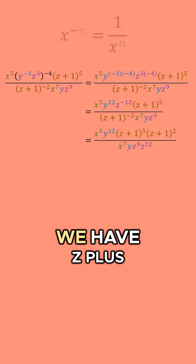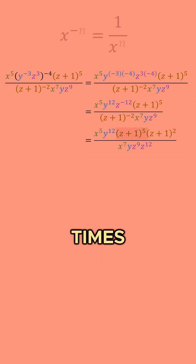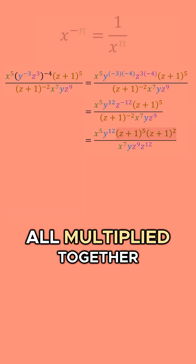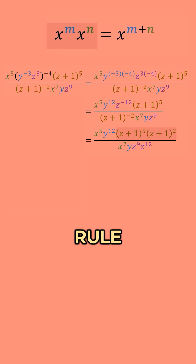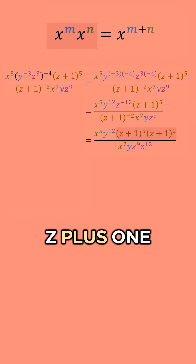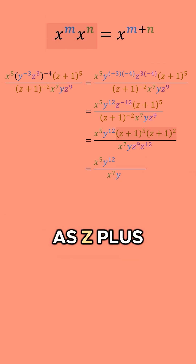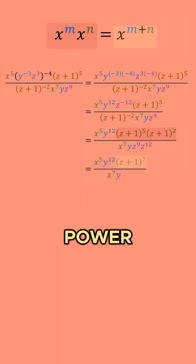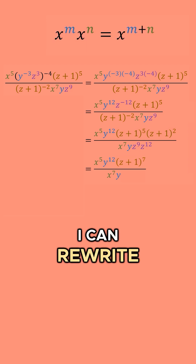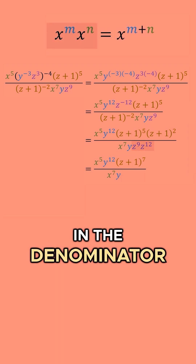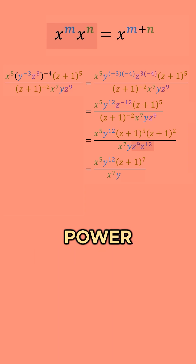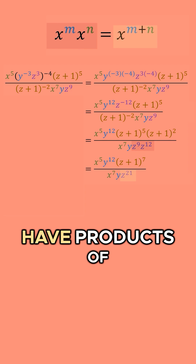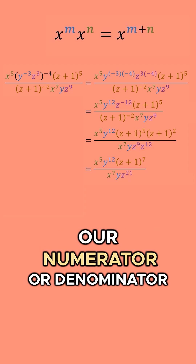In the numerator, we have z plus one to the fifth times z plus one to the second power — they have matching bases. Using the product rule, I can rewrite that as z plus one to the five plus two power, which gives z plus one to the seventh power. Similarly, I can rewrite z to the ninth times z to the twelfth in the denominator as z to the nine plus twelve power, which is z to the twenty-first power. We no longer have products of the same base in the numerator or denominator.